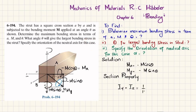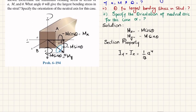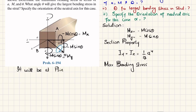So Iz = (1/12)a⁴. For maximum bending stress, the stress at point A is the combination of bending due to Mz and My. The formula is: σ = −Mz · y / Iz − My · z / Iy.